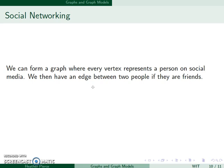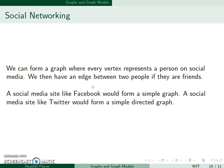We can see graphs everywhere. For example, I can form a graph where every vertex represents a person on social media, and then we'll attach an edge between two people if they're friends. A social media site like Facebook would form a simple graph, since if you're somebody's friend, they are also your friend. So we don't need arrows.